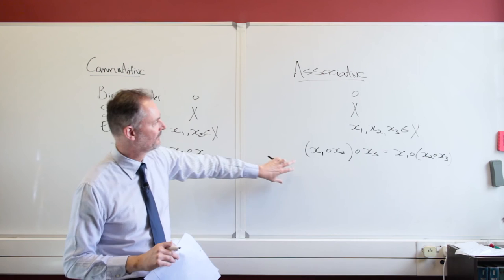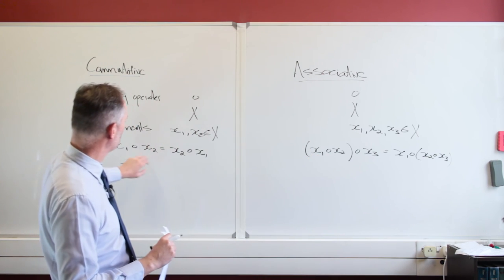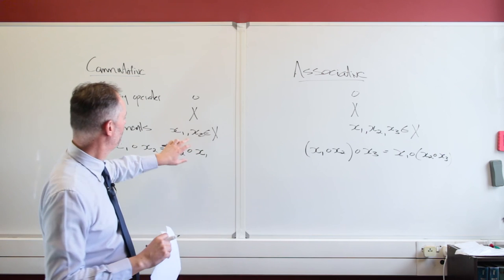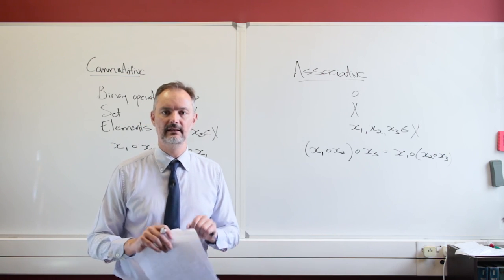we have defined this as an associative type of binary operator and a commutative type of binary operator on elements of a certain set. That is how we define those.